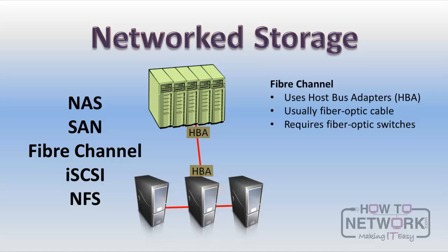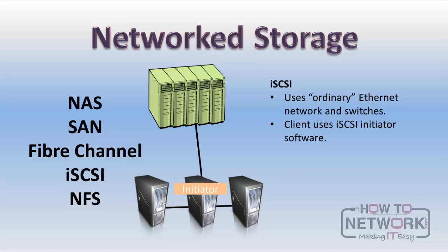Another alternative uses ordinary Ethernet NICs instead of HBAs. It's called iSCSI and can send SCSI commands and data over an IP network. No special cabling or switches are needed, although a separate dedicated network is usually created just for this purpose. Most clients connect to the SAN using software called an iSCSI initiator. iSCSI is often considered a low-cost alternative to fiber channel, but there are many factors to consider, such as whether or not you already have an investment in some fiber channel equipment.